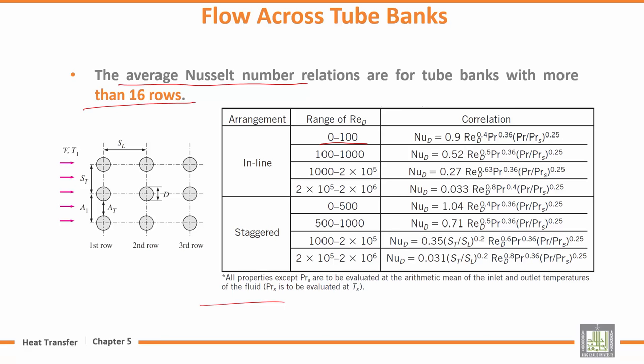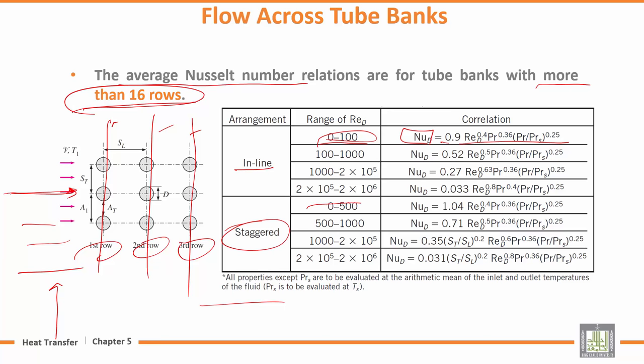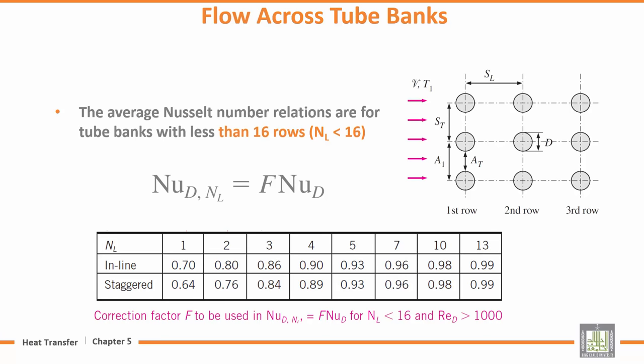If the rows need more than 16. This is the in-line arrangement. If the Reynolds number is equal to this, if it was 0 to 100, if it was 0 to 500, if it was 500 to 1000, we have the corresponding C, M, and N values.